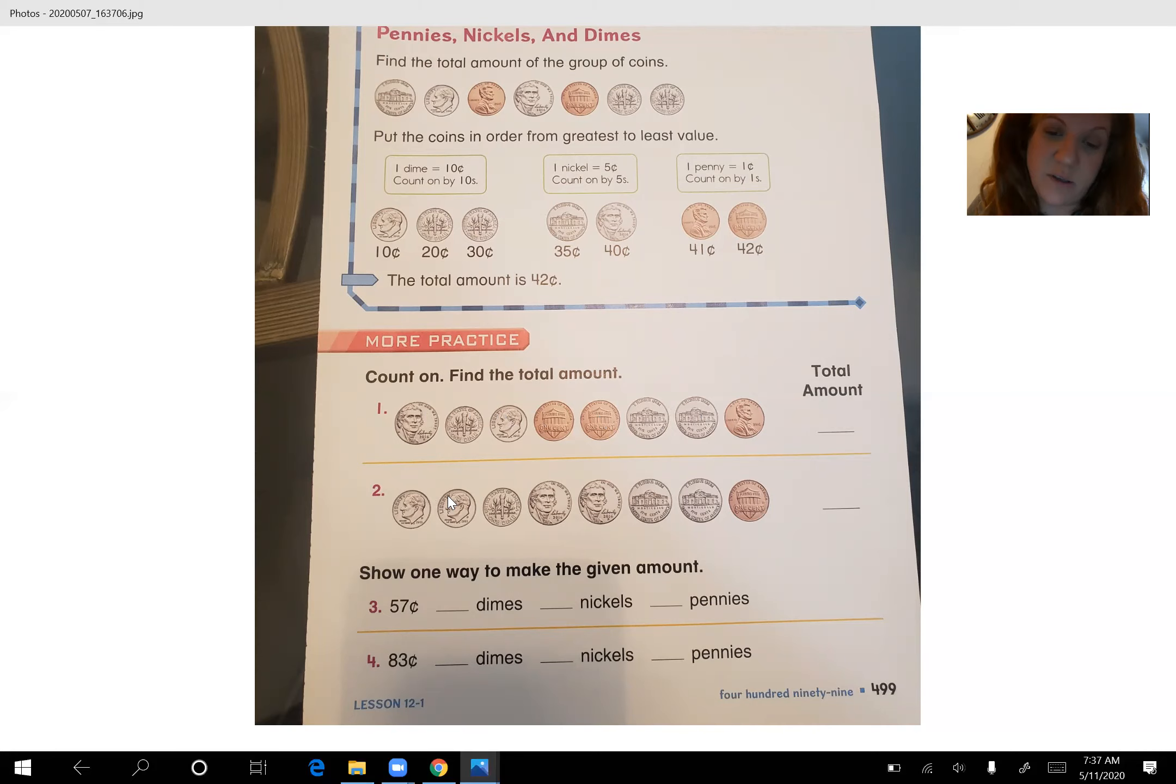Number two, they took the time to put them in the right order. I wish they would have done that for number one, instead of mixing them up. But because it's mixed up, try to start with dimes, then nickels, then pennies. Show one way to make the given amount. Okay, if you had to make 57 cents, it's asking you how many dimes you would need, how many nickels you would need, and how many pennies you would need. So I'm going to start with dimes first. We have 57 cents. So if I did five dimes, how much is that? Remember dimes are 10. So if I had five of them, I would have 10, 20, 30, 40, 50 cents. Now I would need seven more cents. So I can do seven pennies, because those are one cent. And if I had seven of them, I would have seven cents. So 50 plus seven is 57. You're going to try the same thing for number four.